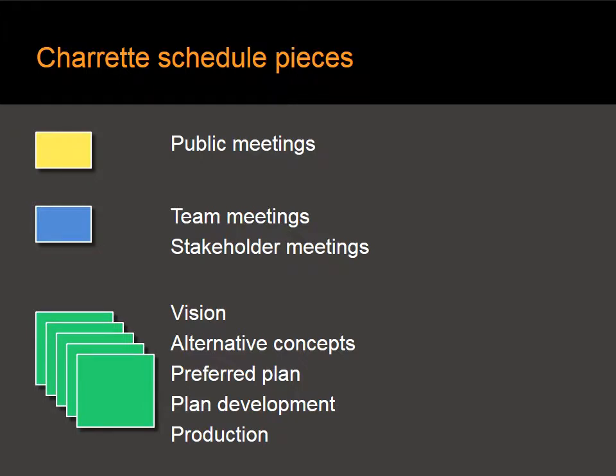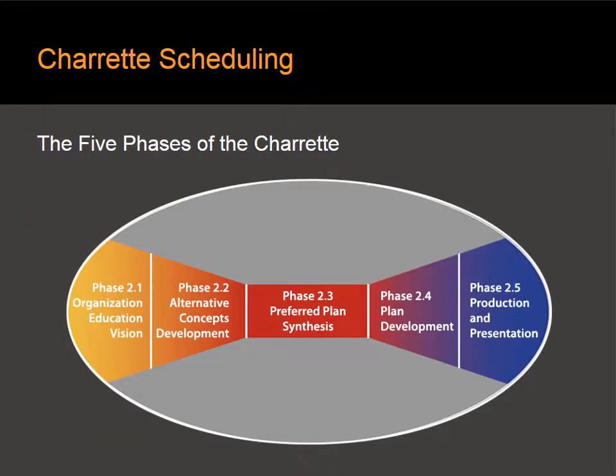Next, create larger green-colored post-its — or another color you have available — to indicate each phase of the charrette process: the vision phase, alternative concept phase, preferred plan phase, plan development phase, and production phase. These are the five phases of the charrette process.